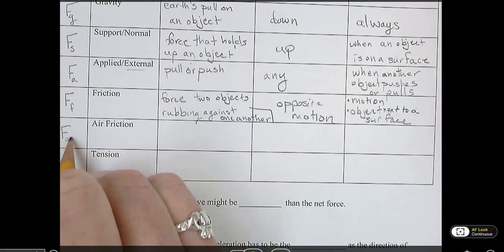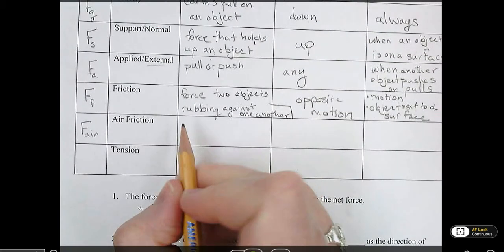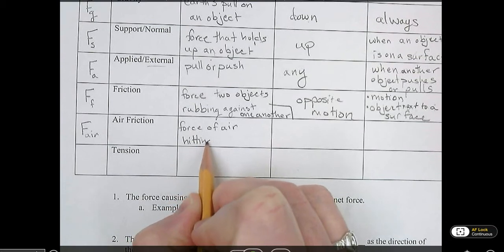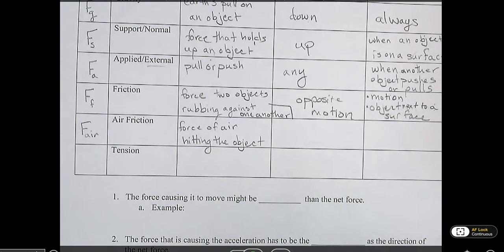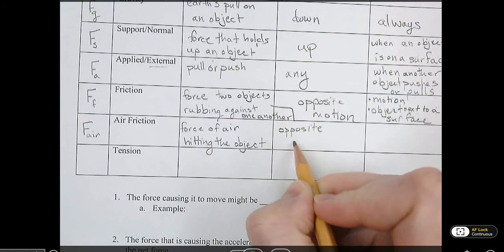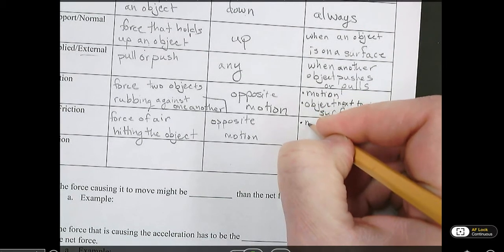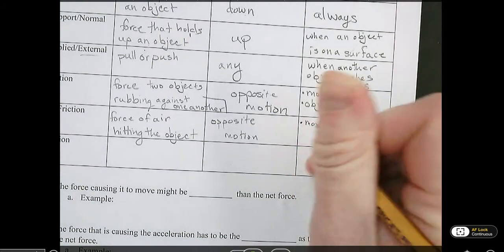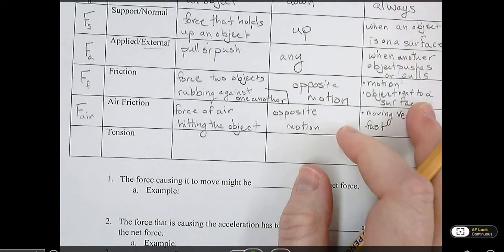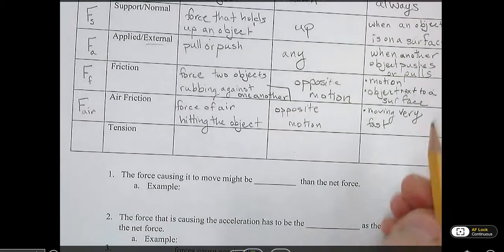Air friction is a specific type. We're going to call it F air. I know with some of you, we just called it friction in general, but we're going to call it air friction specifically. This is the force of air hitting the object. Same thing like friction, this is just a specific type of friction. Opposite motion is when air friction is acting. When is it present? When the object is moving very fast, so when it's flying or falling. There are other times when air friction is present, but we're going to ignore it unless the object is moving very fast. So that's a change from our notes before.